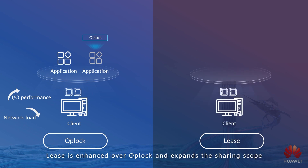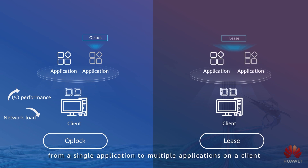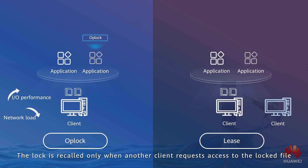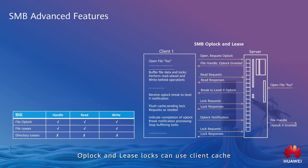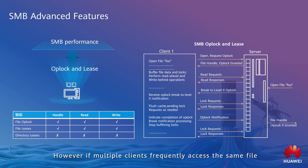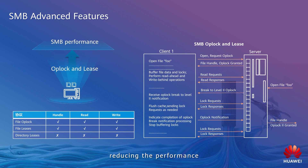Lease is enhanced over Oplock and expands the sharing scope from a single application to multiple applications on a client. These applications can share the Lease lock and client cache. The lock is recalled only when another client requests access to the locked file. Oplock and Lease locks can use client cache to greatly improve SMB performance. However, if multiple clients frequently access the same file, lock recall is repeatedly triggered, reducing the performance.